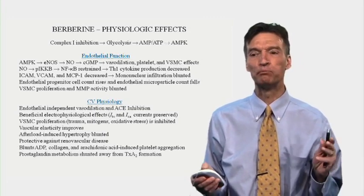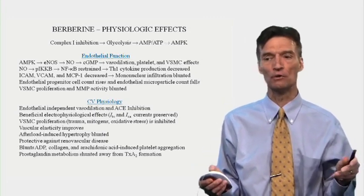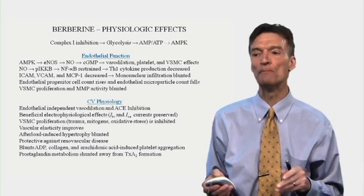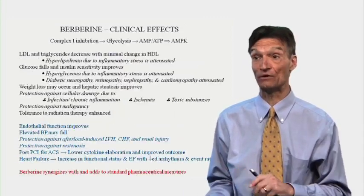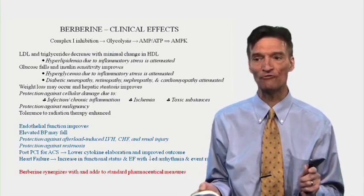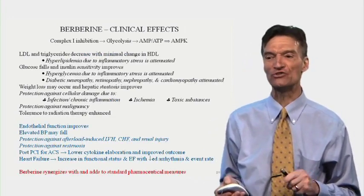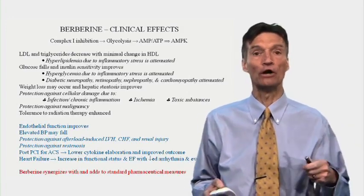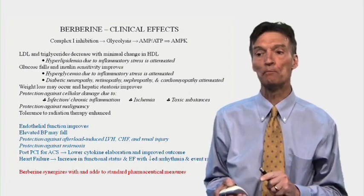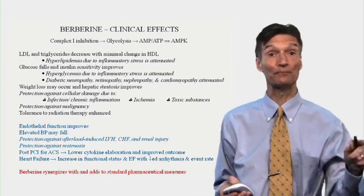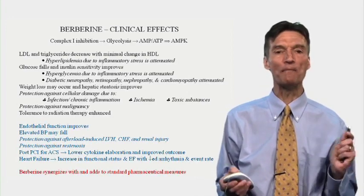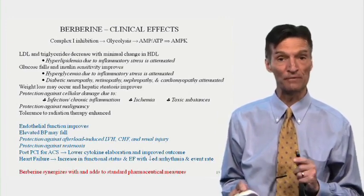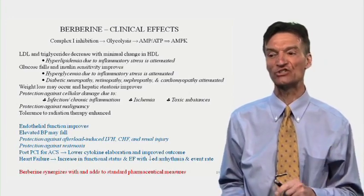We blunt abnormal platelet reactivity and shunt prostaglandin metabolism away from thromboxane-A2, which causes platelet activation and adherence. Endothelial function improves, elevated blood pressure may fall. Protection in animal models against afterload-induced left ventricular hypertrophy, heart failure, and renal injury. Protection against restenosis in humans receiving stents. For an acute coronary event, there's lower cytokine elaboration post-stenting and improved outcome — adverse event rate falls from 10% to 7%. In patients with heart failure on maximal drug therapy, if you add berberine, there's an increase in functional status and ejection fraction, decreased arrhythmia, significant improvement in outcome, lower readmission and lower mortality rates. Berberine synergizes with and adds to standard pharmaceutical measures.